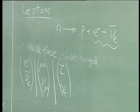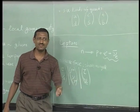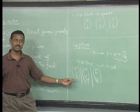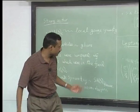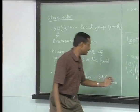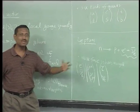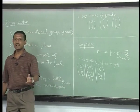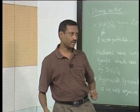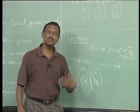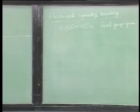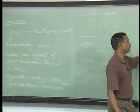The solar neutrino puzzle is resolved by saying some neutrinos get converted to another flavor. As theorists, we understand how to handle these particles even if they have small masses. But nature chooses what it chooses, and this is a very theoretical course — we will look at mechanisms. The standard model has three local gauge symmetries: SU(3)_c, SU(2), and U(1). At very high energies, these hidden or broken symmetries will become obvious.